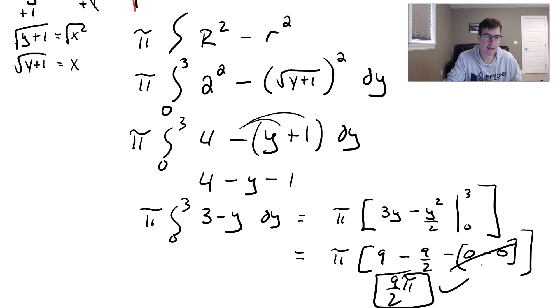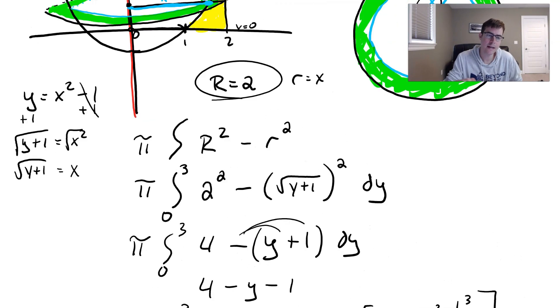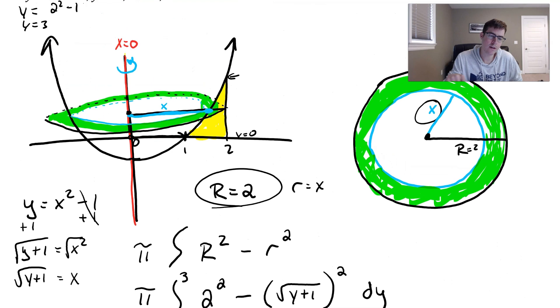So just the really important thing here is to make sure when you're drawing in your radii, make sure you do it from the center out to the farthest line and then out to the closer line there. And you'll have your region.